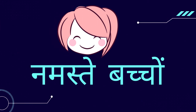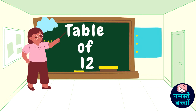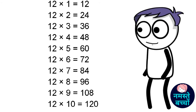Namaste Bacho. Today we are learning the table of twelve. So let's start. Twelve ones are twelve. Twelve twos are twenty-four. Twelve threes are thirty-six.